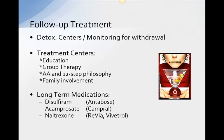Antabuse is used to prevent drinking by causing an unpleasant reaction if the person consumes alcohol. Adverse reactions include flushing, intense vasodilation of the face, neck, and upper body, hyperventilation, palpitations, nausea, vomiting, headache, sweating, thirst, weakness, blurred vision, and hypotension. These effects last 30 minutes to several hours and are brought on by as little as 7 milliliters of alcohol. In the absence of alcohol, it has no effect.